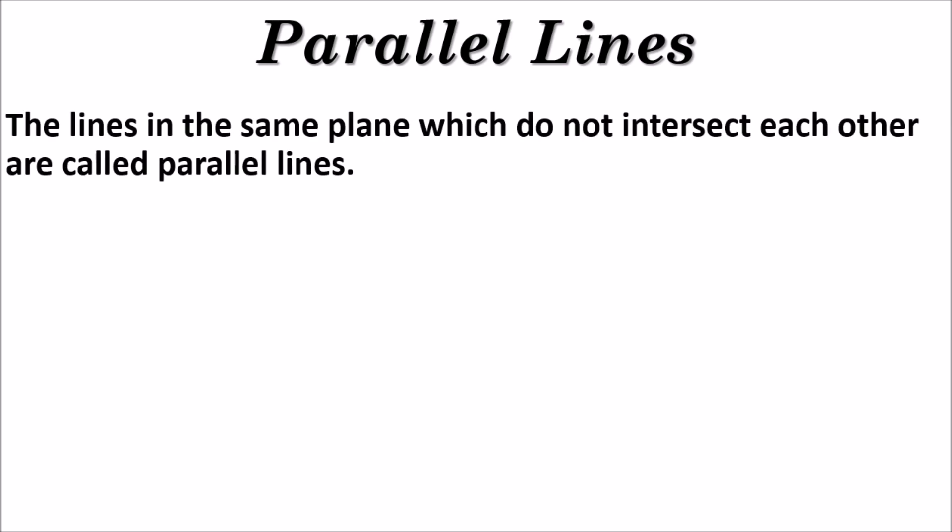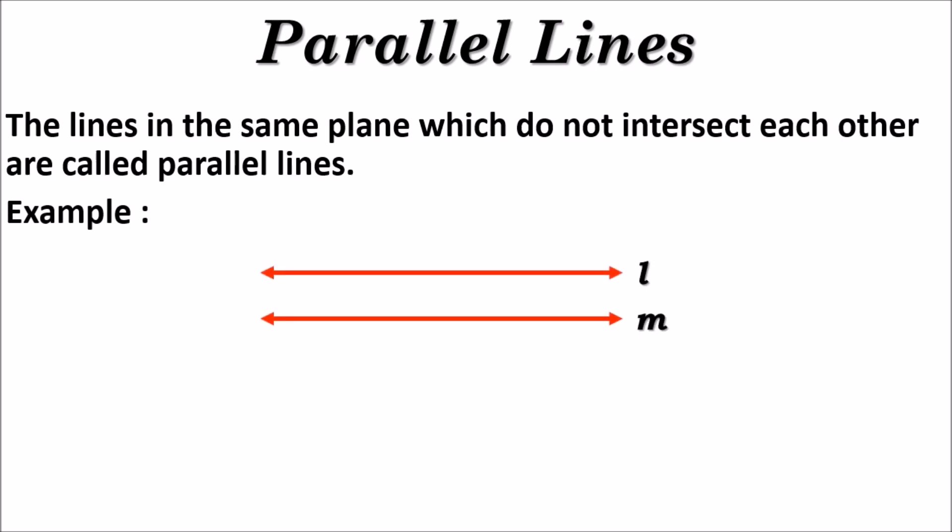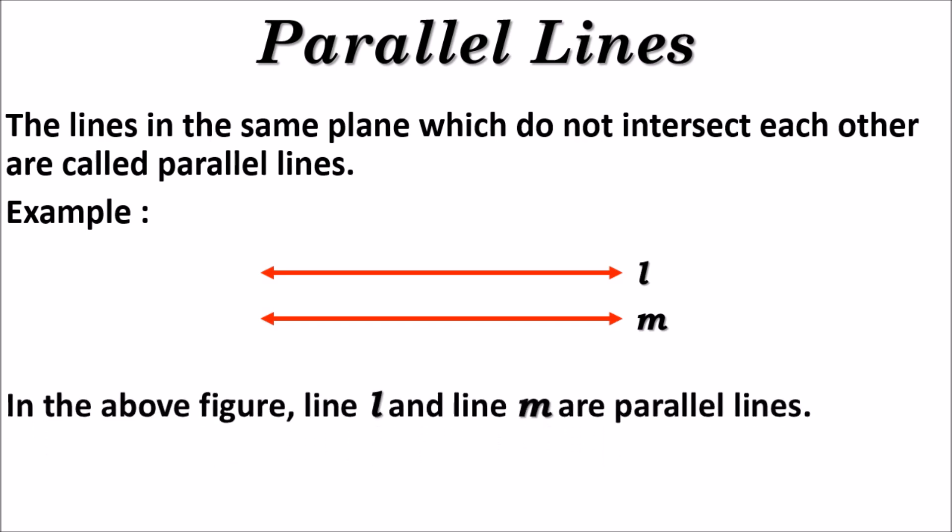What are parallel lines? The lines in the same plane which do not intersect each other are called parallel lines. If the lines do not meet each other, then those lines are called parallel lines. For example, here we have line L and line M, and you can see that line L and line M do not meet each other, do not intersect each other. Even the distance between those two lines is the same. Such lines are called parallel lines.